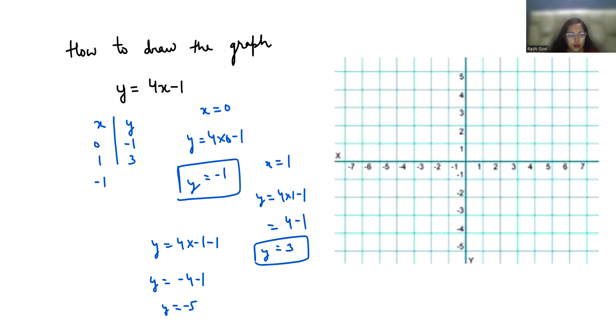So let's plot these points. First coordinate is (0, -1), then (1, 3), then (-1, -5). So the horizontal is our x-axis and vertical is our y-axis.